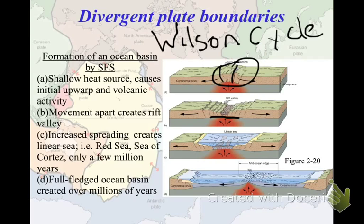Eventually the center rift valley becomes so low that water from nearby oceans rushes in, creating what we call a linear sea — a very young ocean. The Red Sea is an example of this, only a couple million years old. As time goes on, those plates move farther and farther apart and you get a full ocean basin.